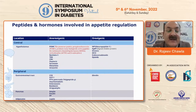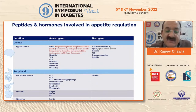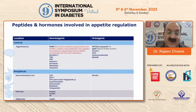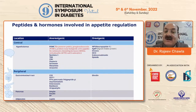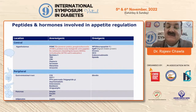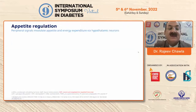When it comes to peripheral peptides and hormones, CCK — cholecystokinin — coming from the gastrointestinal tract is very important. GLP-1, we all know — that is how we use GLP-1 receptor agonists, which principally work as anorexigenic hormones. Pancreatic polypeptide and oxyntomodulin are also very important. When it comes to orexigenic hormones from the gut, it is ghrelin that plays an important role, and it actually contributes towards obesity by significantly increasing appetite. Pancreatic peptides, amylin, and insulin are also very important.